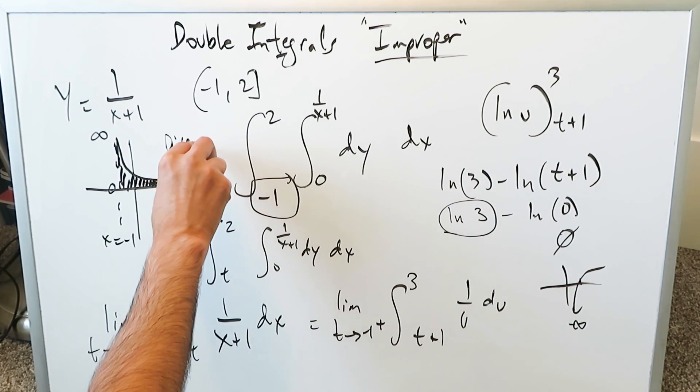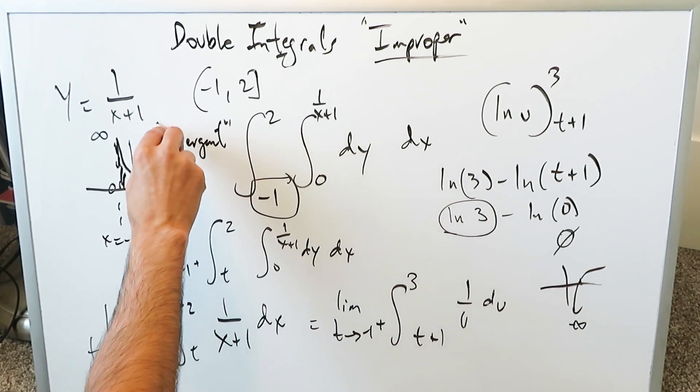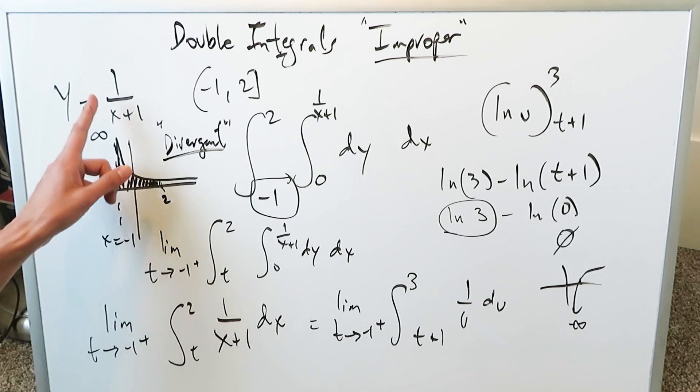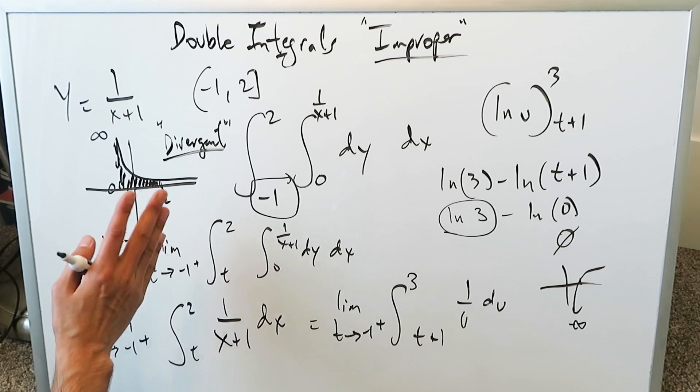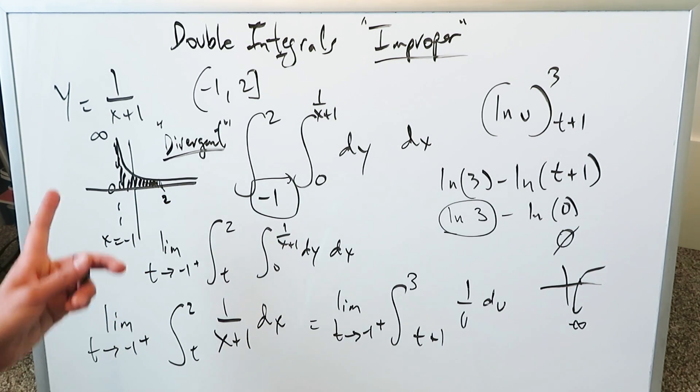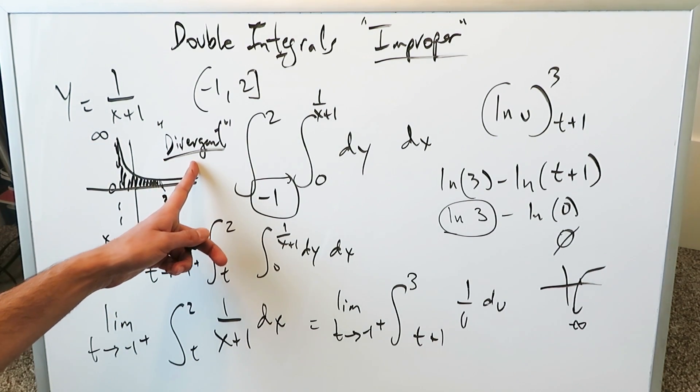The end result of this is your integral is divergent. You cannot get a finite value of this area represented by means of the shaded region from minus 1 to 2. This is a double integral type 2 but the end result is it's divergent.